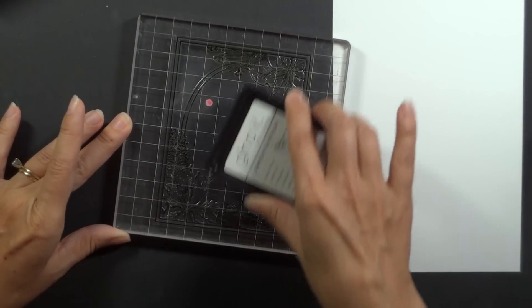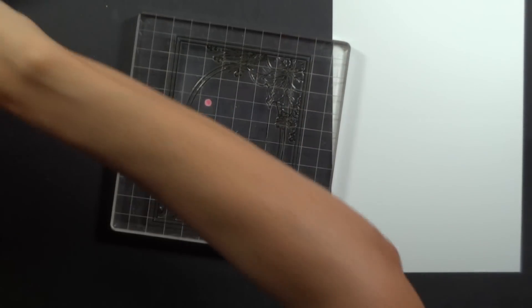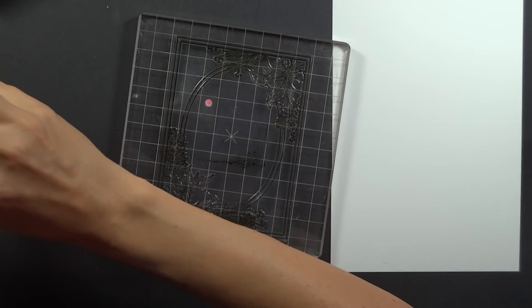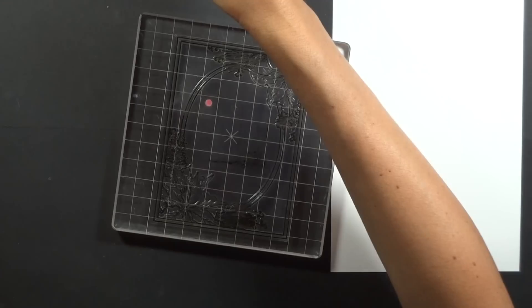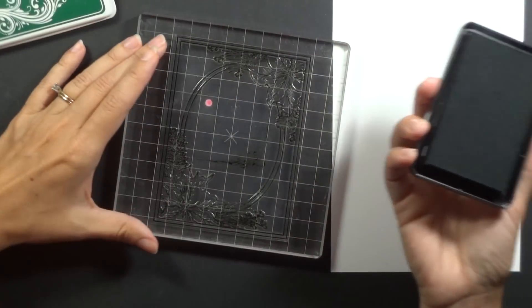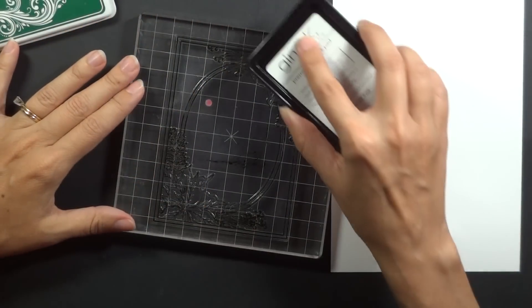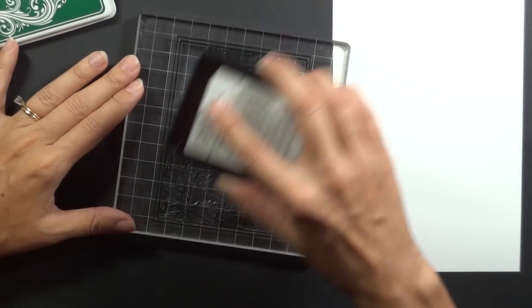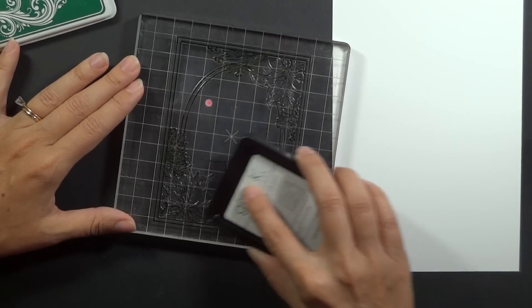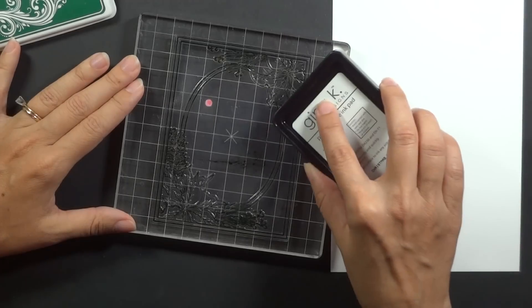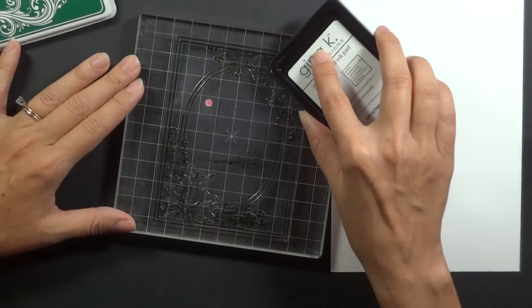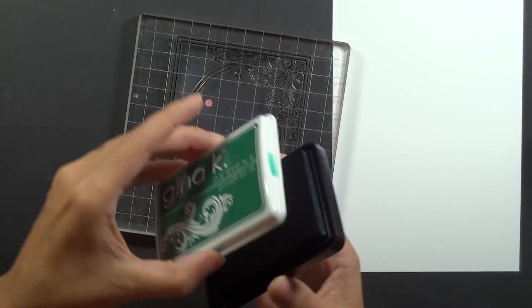So I'm going to ink all over and the frame is just great for creating a really quick but balanced layout on your cards. Then I'm going to take the Christmas pine and I'm going to use just the edge of that and I'm going to swipe over just those little pine needles there at the corners and then just touching a little bit into the poinsettia.